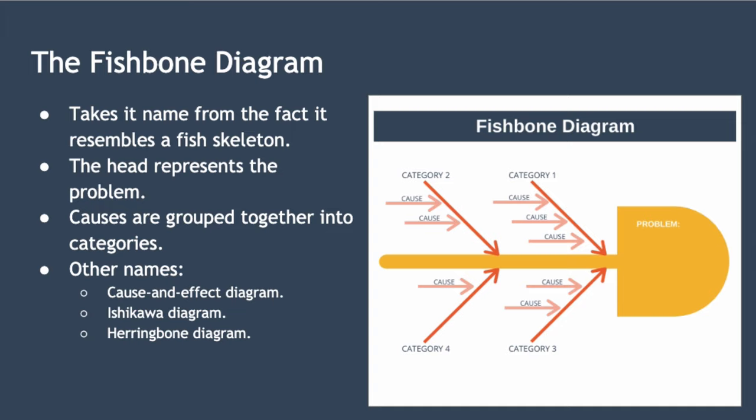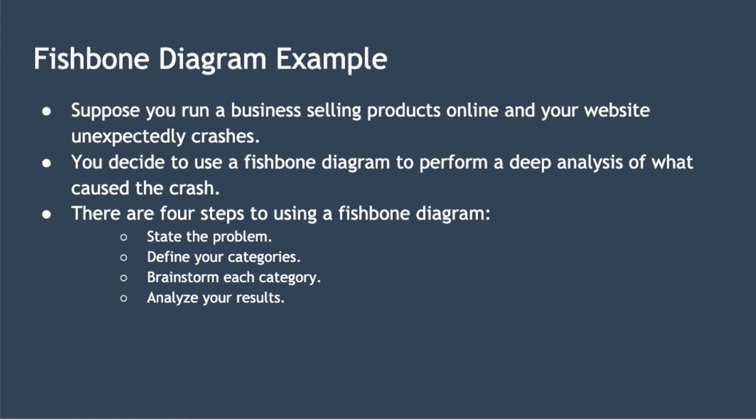So let's take a look at an example. Suppose you run a business selling products online and your website unexpectedly crashes. As the website has crashed, your first priority will be to get the website going again as soon as possible. But once this is done, you decide to use a fishbone diagram to perform a deeper analysis of what caused the website to crash so that you can prevent the same problem from happening again. To do this, you get the key members of your team together, along with a fishbone template, and brainstorm the potential reasons the website crashed.